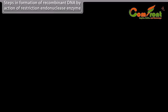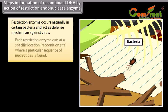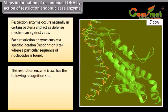Steps in formation of recombinant DNA by action of restriction endonuclease enzyme. Restriction enzymes occur naturally in certain bacteria and act as a defense mechanism against viruses. Each restriction enzyme cuts at a specific location called the recognition site, where a particular sequence of nucleotides is found. The restriction enzyme EcoRI has the following recognition site: 5'-G-A-A-T-T-C-3' / 3'-C-T-T-A-A-G-5'.